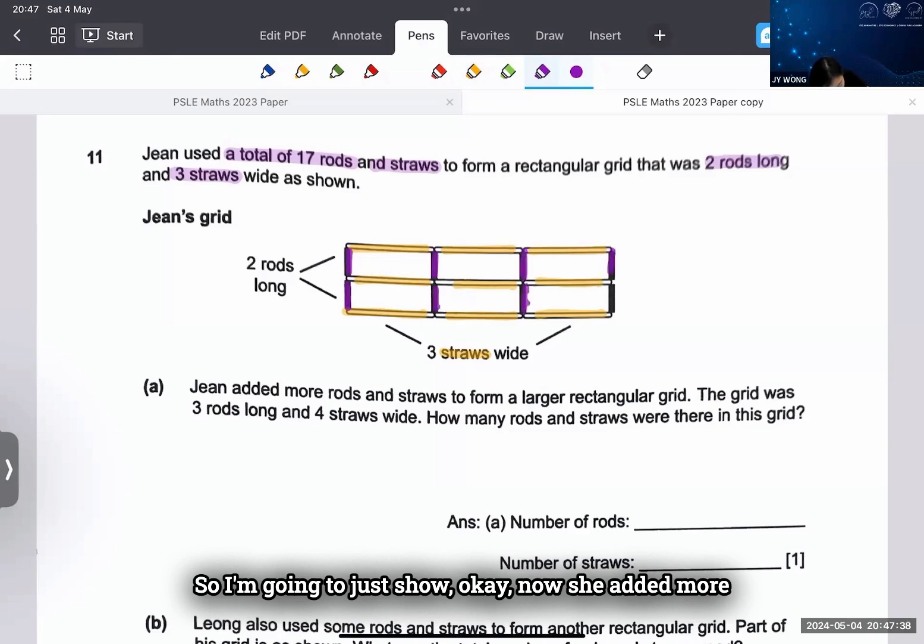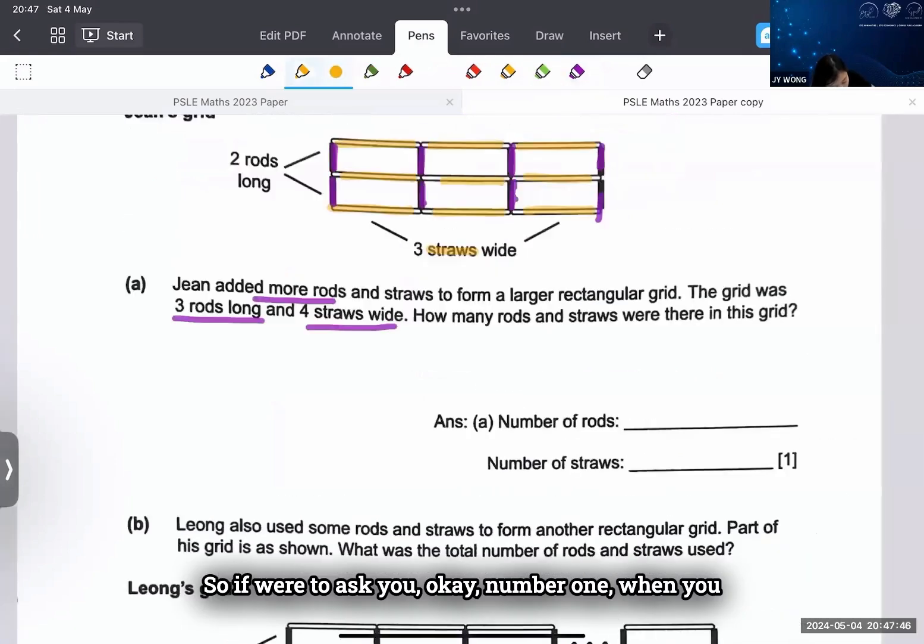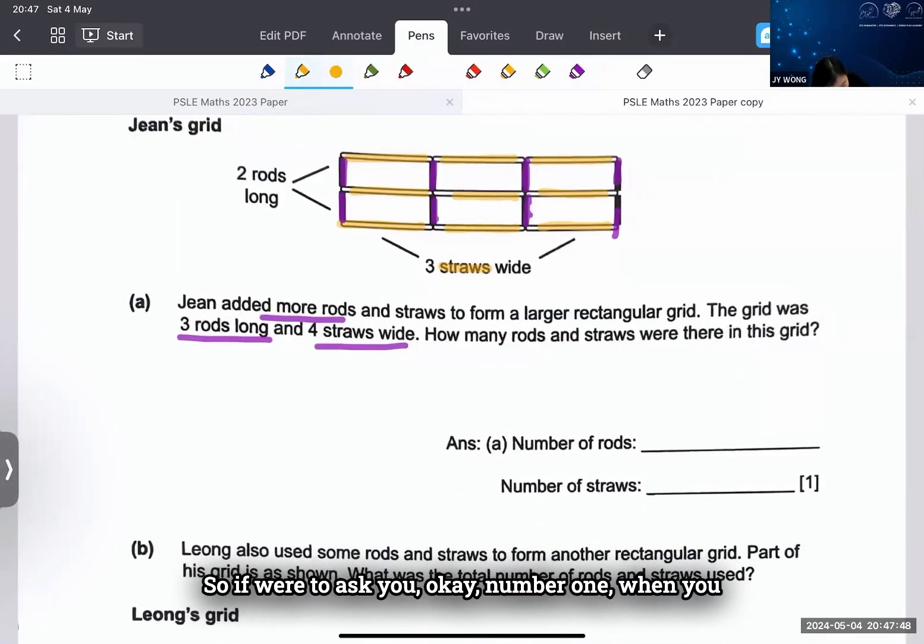Okay, now she added more rods and straws to form 3 rods long and 4 straws wide. So if I want to ask you, number one: when you have 3 rods, that means you will have 3 rows, correct? But how many rows of straws would you have?